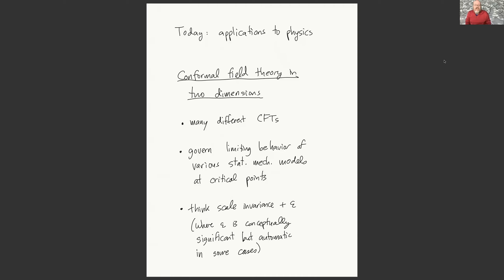What do we mean by conformal field theories? These are quantum field theories that are invariant under all conformal transformations. Part of what's important about them is that we expect lots of statistical mechanics models to degenerate to a conformal field theory at certain critical points. We expect critical phenomena to be scaling invariant, but scaling invariant is not quite the same thing as conformally invariant—conformal invariance is much stronger because it's a sort of local scaling invariance where you can rescale by different amounts at different points. Global scale invariance is weaker, but in a lot of cases conformal invariance sort of comes along for the ride. We can think of this as doing quantum field theory in a scale invariant way, plus a little bit more.